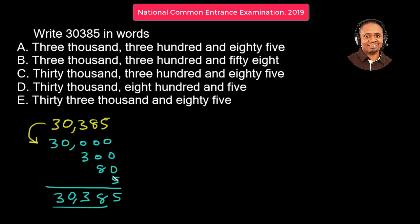And these broken down numbers is what we're going to use to write out these numbers in words. So first we write out 30,000. 30,000. Alright, then the comma.